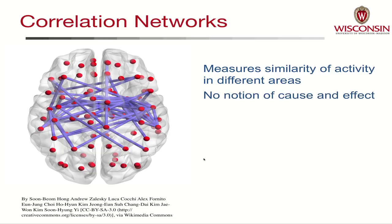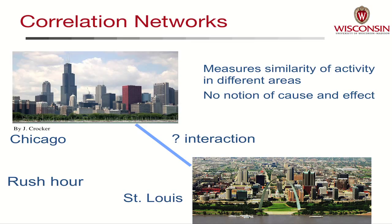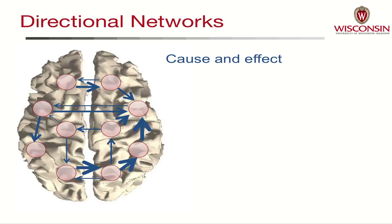The downside of a correlation network is it doesn't tell us anything about cause and effect. If we look at traffic in the city of Chicago and in the city of St. Louis and we notice that between 7 and 9 a.m. the traffic increases in both cities, and then between 4 and 6 p.m. the traffic is large again and there's not much traffic late at night — well, that's just a third effect, the effect of rush hour. It's not to say that the traffic in St. Louis and in Chicago are interacting in any sense at all. So the ideal network model for the brain would include the idea of cause and effect and be directional — one region of the brain is causing something to happen in another region.